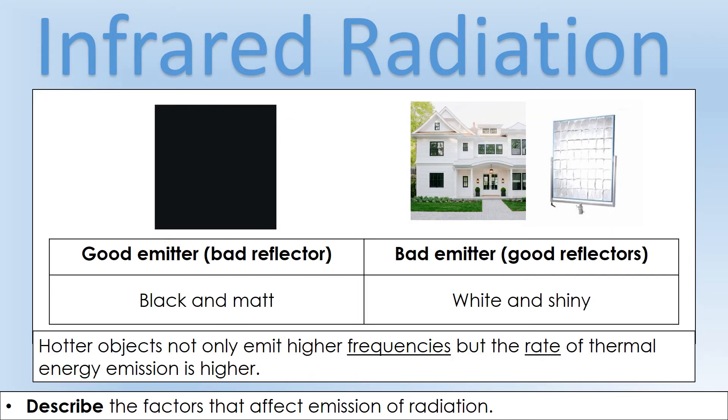We can also look at how to make good emitters of radiation. Things which are good absorbers of radiation are also very good at emitting radiation. If we have an object which is black and matte, in terms of emission it will emit more thermal energy per second or have a higher rate of emission. It's the opposite with white and shiny, which would have a lower rate of emission.